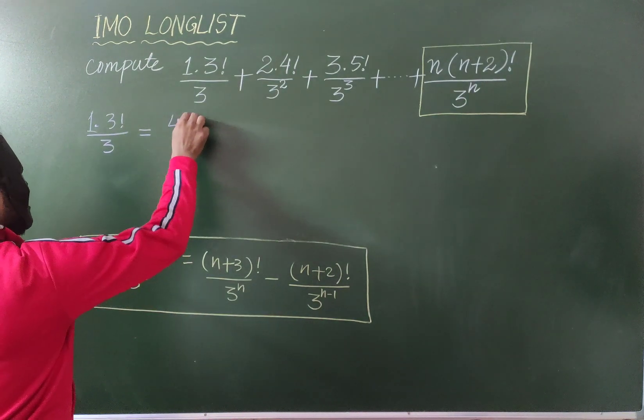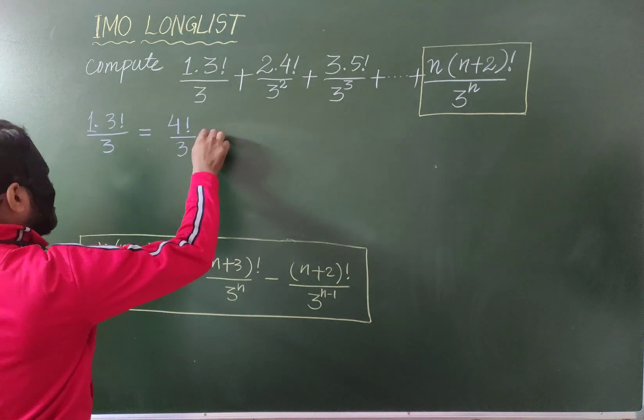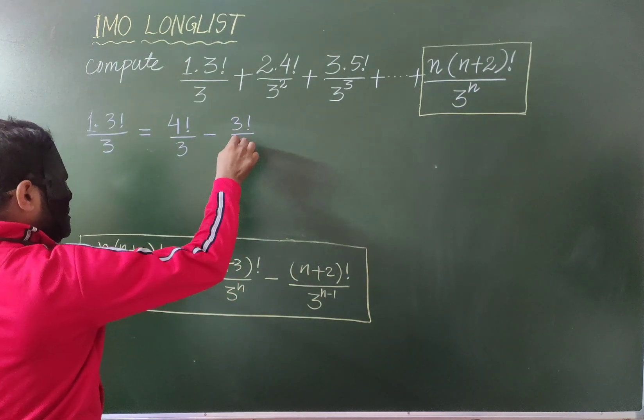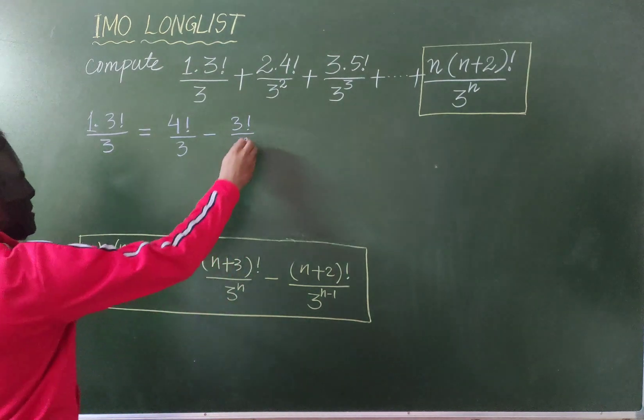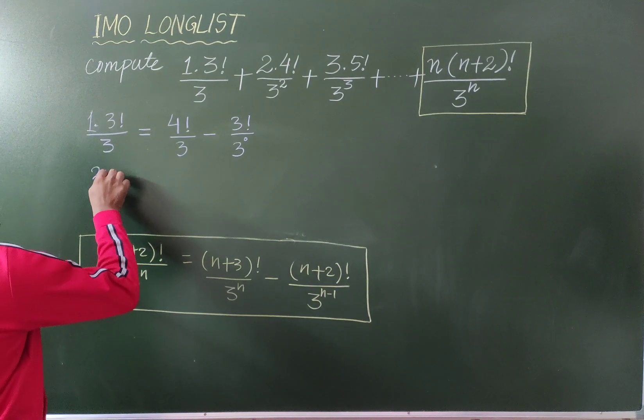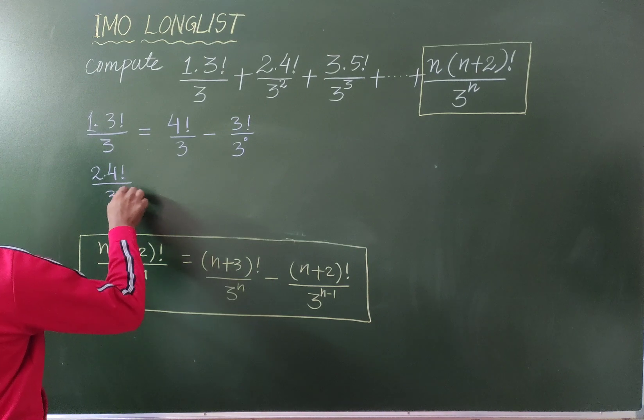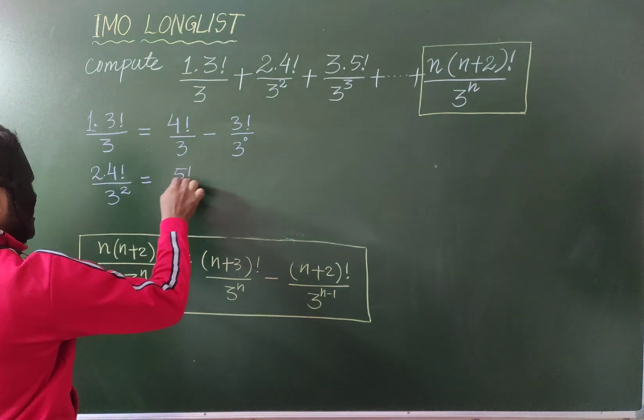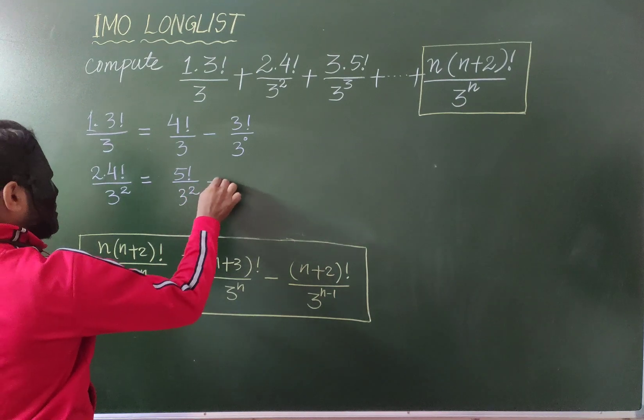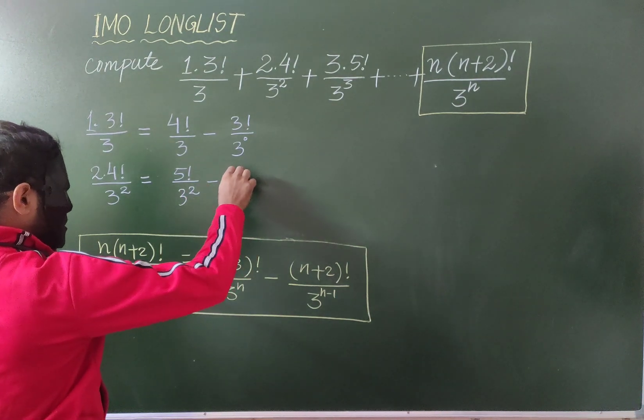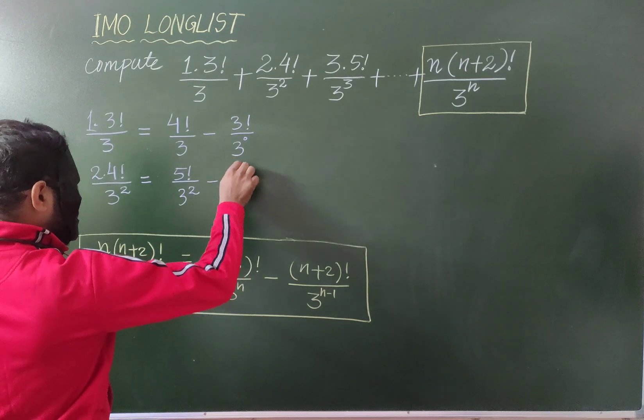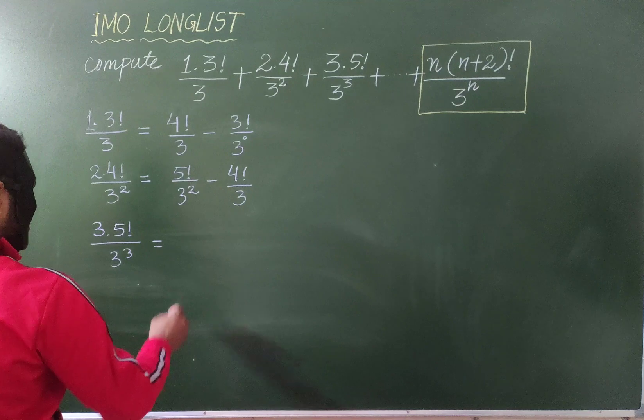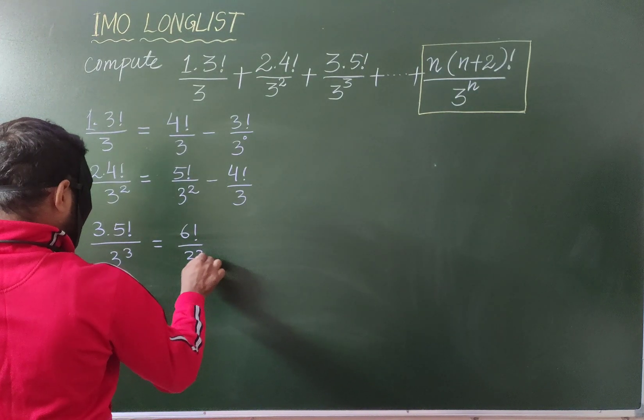So, that is 3 factorial by 3. And 2 times 4 factorial by 3 square will be 5 factorial by 3 square minus 4 factorial by 3, and we will be continuing this pattern through the terms.